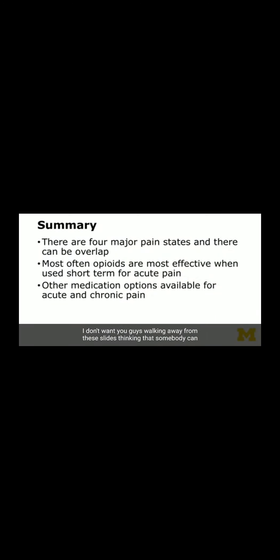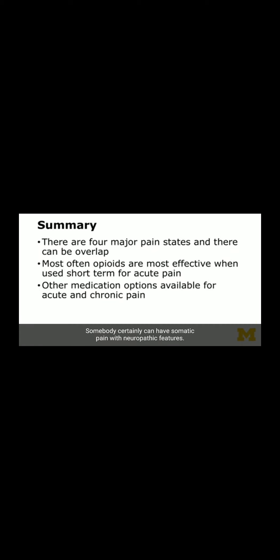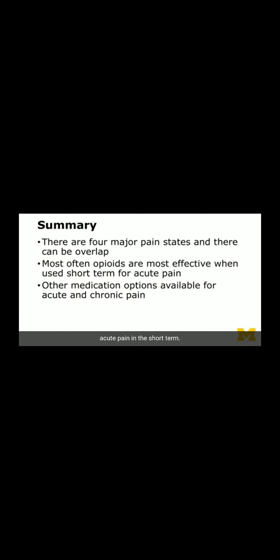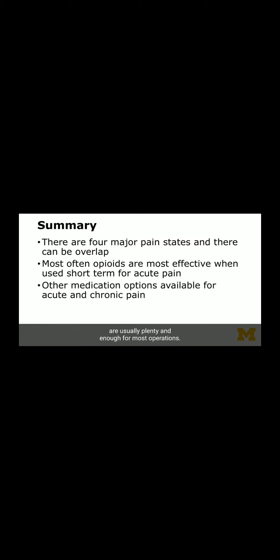To summarize: there are four major pain states, and there can certainly be overlap — somebody can have somatic pain with neuropathic features. Opioids are most effective if used for acute pain in the short term, recognizing that NSAIDs and acetaminophen are usually enough for most operations. Other medications exist for acute pain and should be used. There are more effective medications for chronic pain than opioids, and those will be discussed.